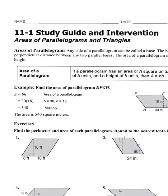For areas of parallelograms, any side of the parallelogram can be called a base — it can look like the bottom or the side. The height of the parallelogram is the perpendicular distance between any two parallel lines, so for the height we're looking for the line that creates a right angle. The main formula for this lesson is area equals base times height.